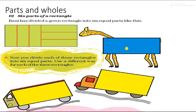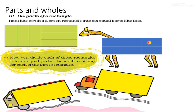So let's divide this rectangle into 6 equal parts: 1, 2, 3, 4, 5, 6. Likewise, you have to divide these 2 rectangles into 6 equal parts and you have to use different ways. So you will do this exercise yourself in your notebook.